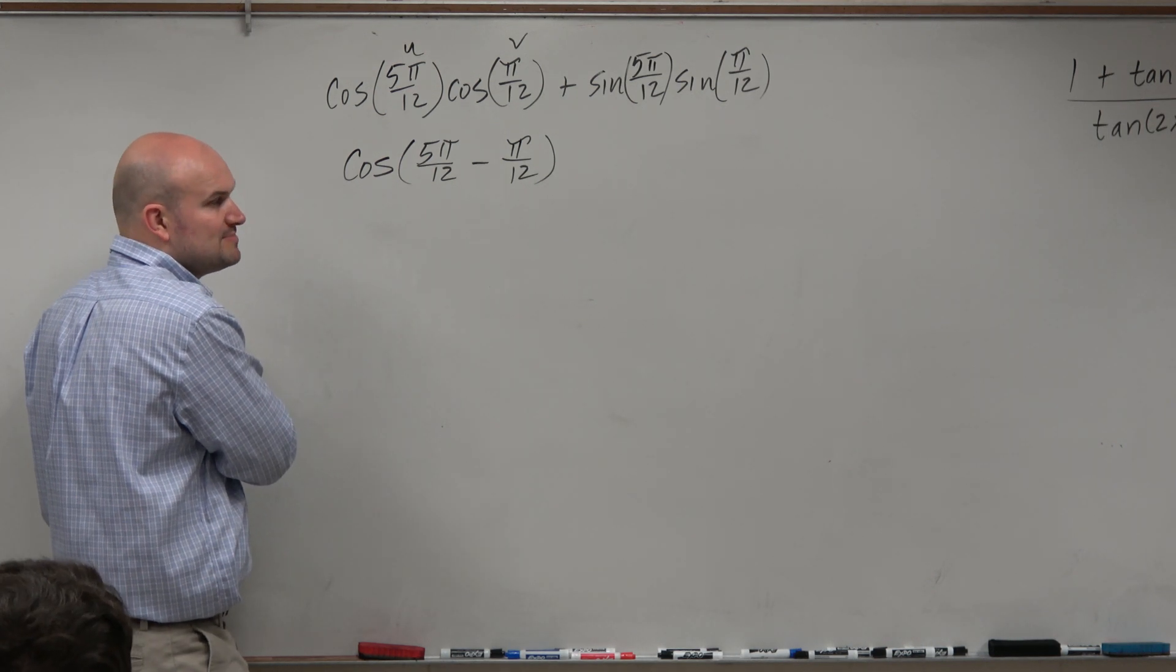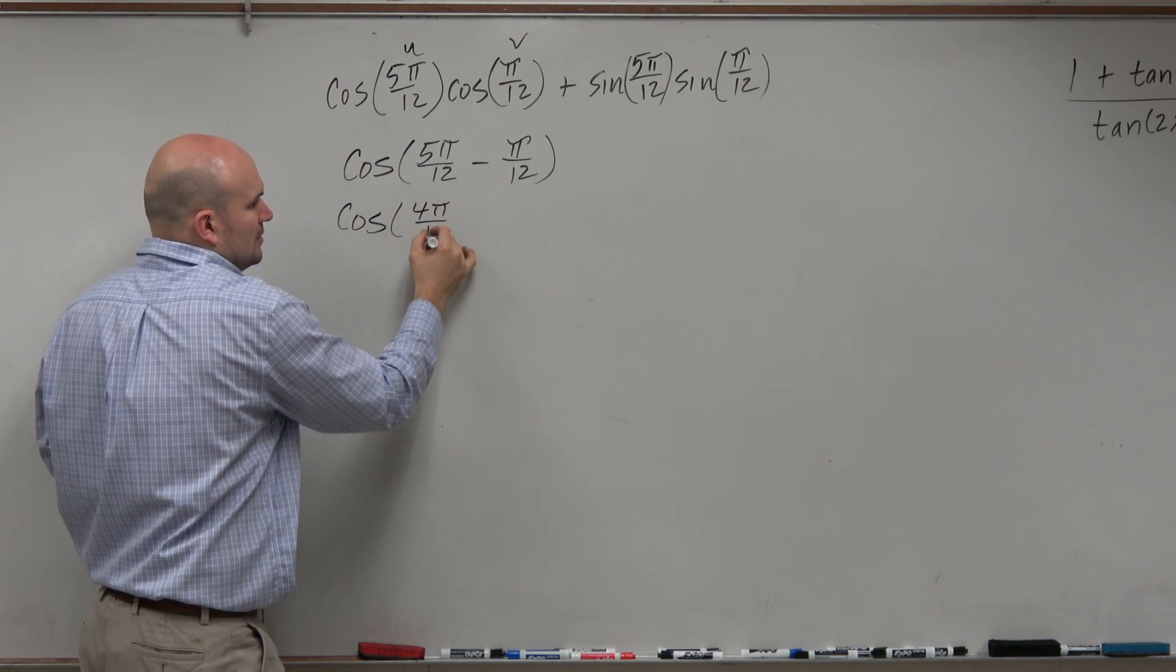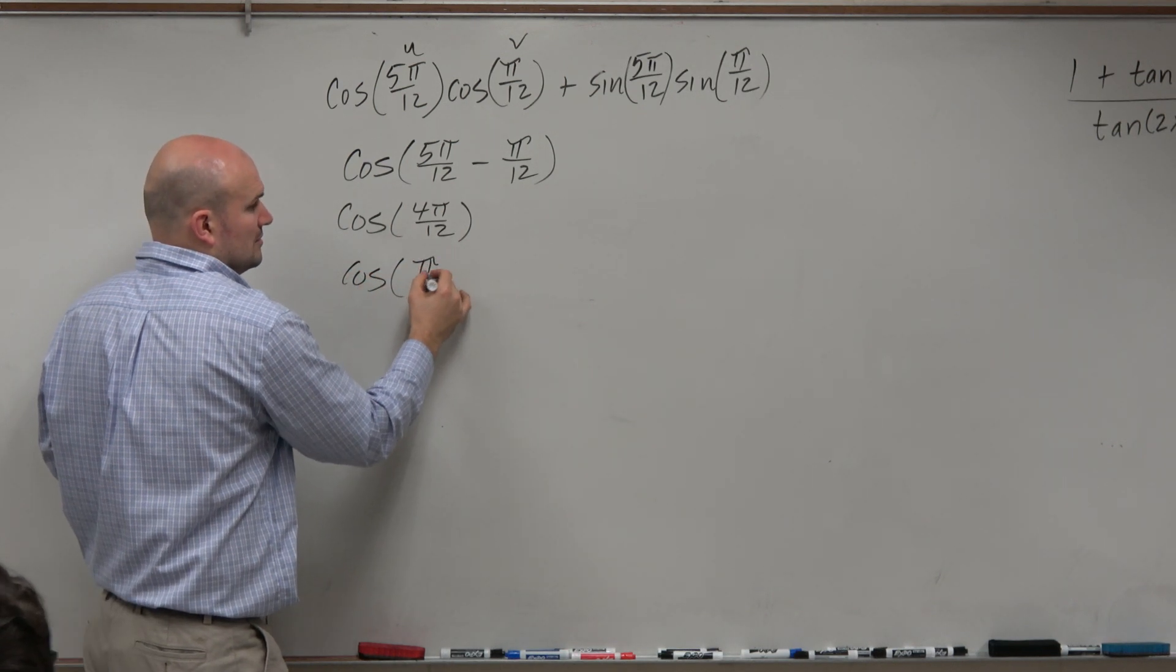So 5 pi over 12 minus pi over 12 is 4 pi over 12, which can also be reduced to pi over 3.